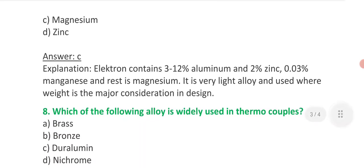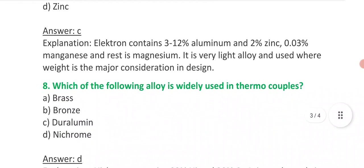Question 8: which of the following alloy is widely used in thermocouples - option A brass, option B bronze, option C duralumin, option D nichrome. Answer is D.